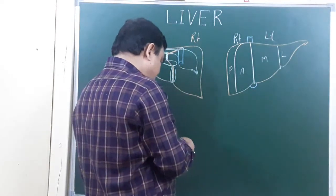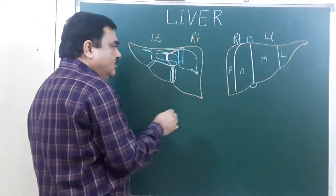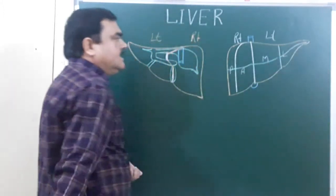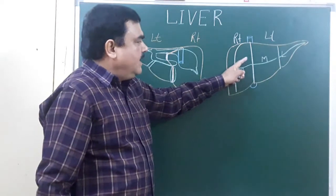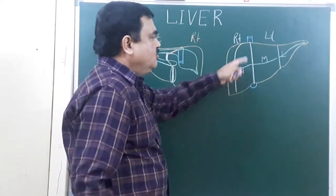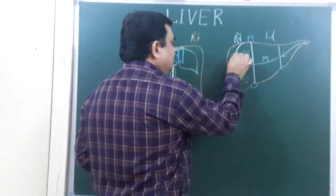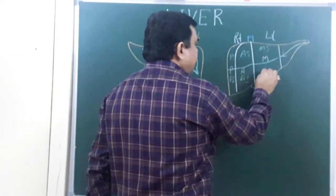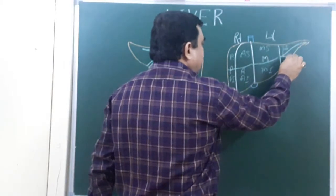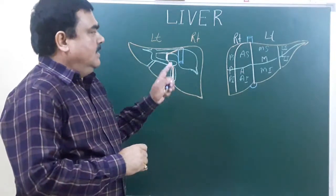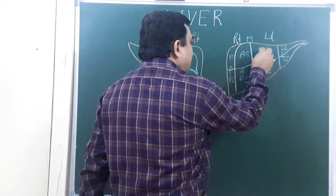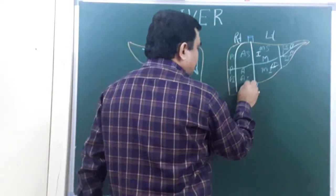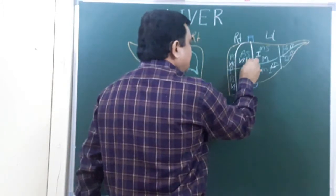The liver is also divided by Couinaud segmentation into eight segments using a horizontal line. On the right side: antero-superior, antero-inferior, postero-superior, and postero-inferior. On the left side: medial superior, medial inferior, lateral superior, and lateral inferior segments. International numbers are assigned to each segment: segment one through eight, giving a total of eight segments.